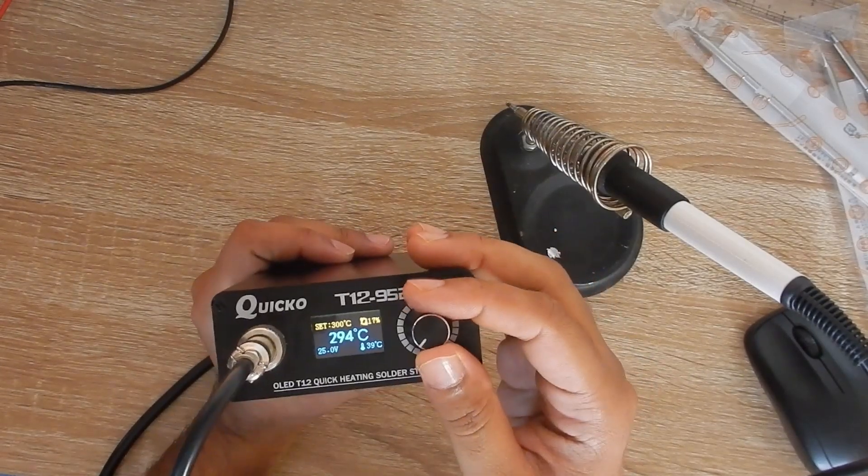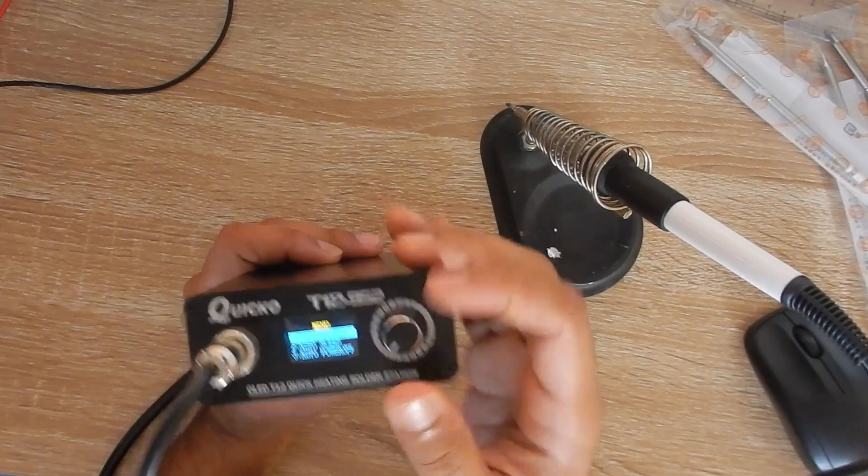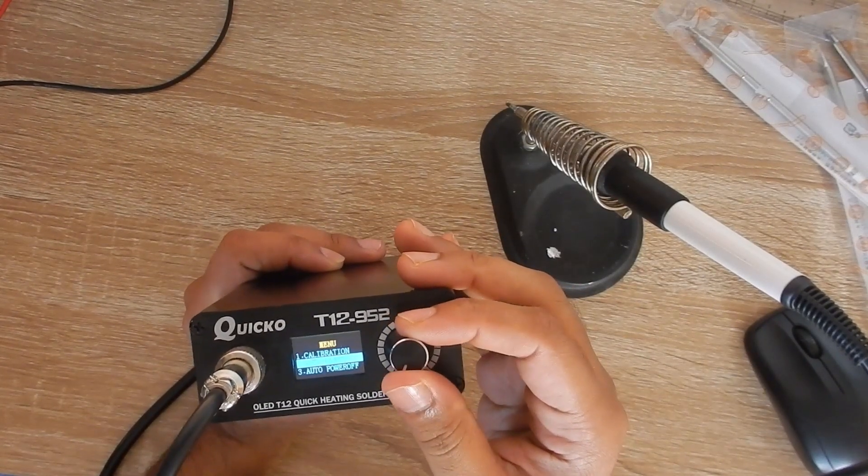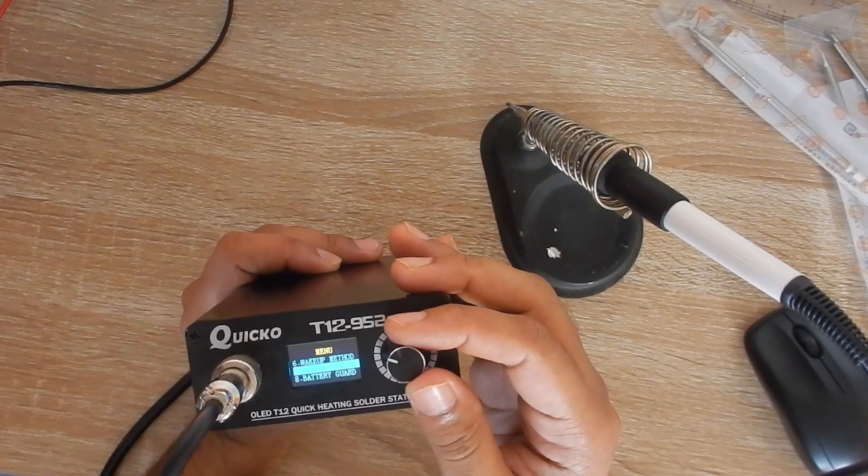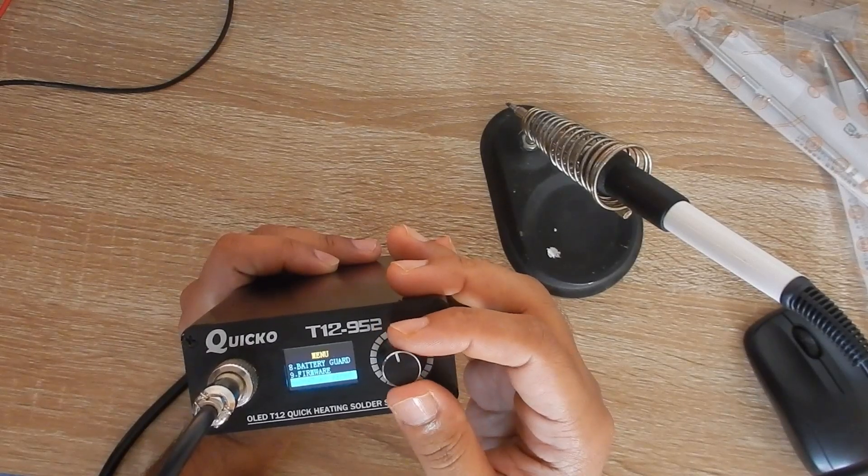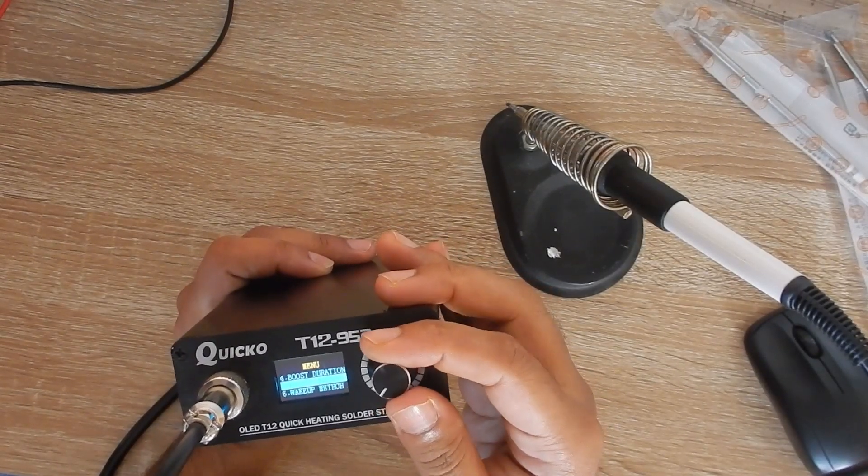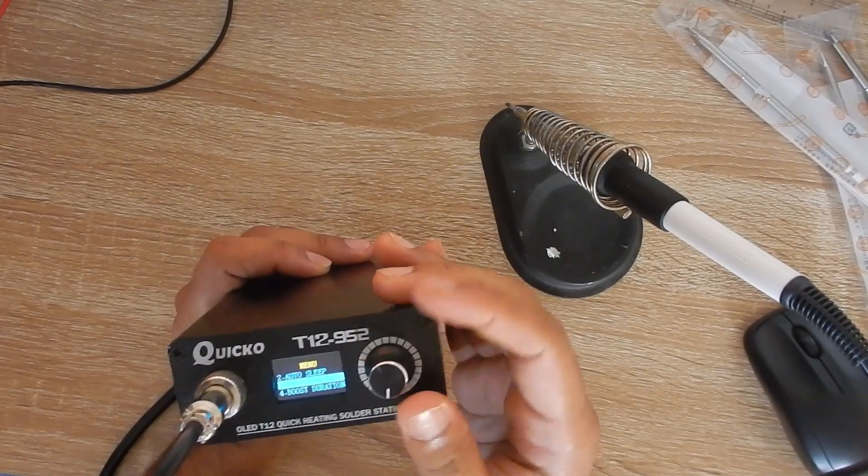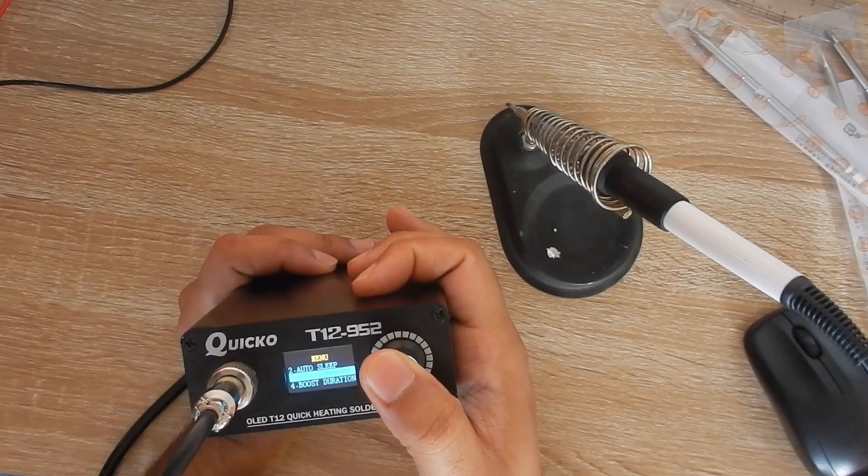To change the temperature you need to use the knob. The knob is a rotary encoder so you can turn it freely. To enter into the menu you need to press and hold the knob. There are 10 items on the menu: calibration, sleep, auto power off, boost duration, boost degree, wake up method, buzzer switch, battery guard, firmware and factory setting. You can explore the menu by yourself.